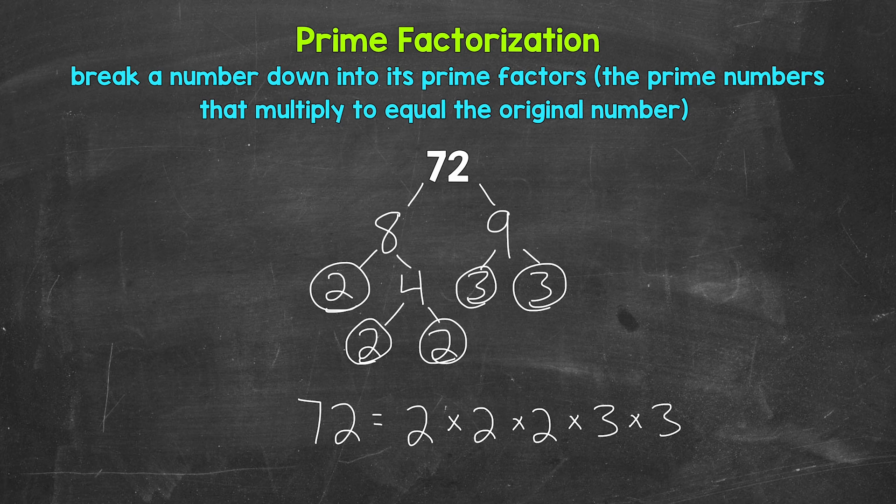If we have all of the correct prime numbers, they will multiply to equal our original number. So we can check here. Two times two is four, times two is eight, times three is 24, times three is 72. So we are correct here.